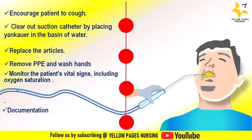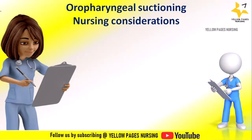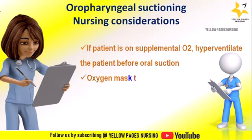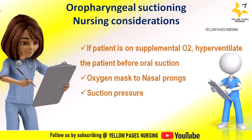Nursing considerations: if the patient is on oxygen support, hyperventilate before oropharyngeal suctioning. If the patient is on an oxygen mask, switch to nasal prong before performing suctioning. Suction pressure should not exceed 150 mmHg and should always be maintained between 100 to 120 mmHg to prevent bleeding or injury to the oral cavity.